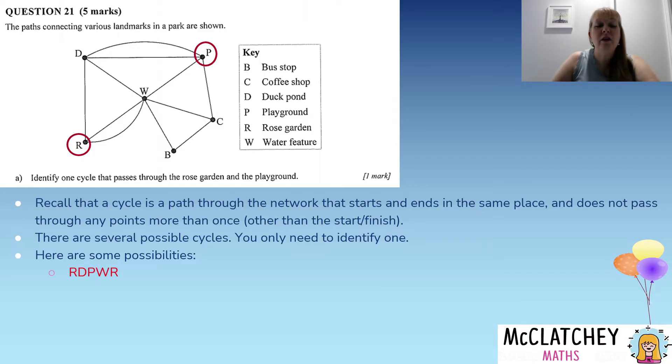Starting with the rose garden, we could go up to the duck pond, out to the playground to the water feature, back to the rose garden. Or we could have gone rose garden out to the water feature, so we're basically doing that in reverse, then up to the playground, out to the duck pond, back to the rose garden. Once again, another cycle.